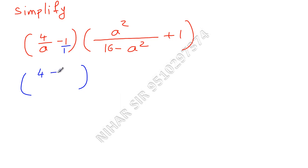In another bracket, LCM is 16 minus a squared. So a squared remains same, plus here in the denominator 1. One multiply by what gives you 16 minus a squared? That is 16 minus a squared, so I will write 16 minus a squared over here in the